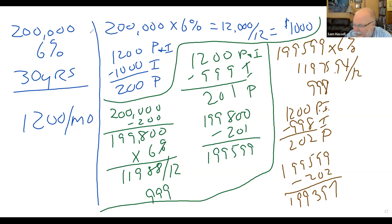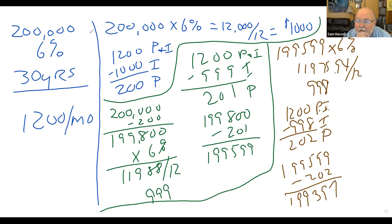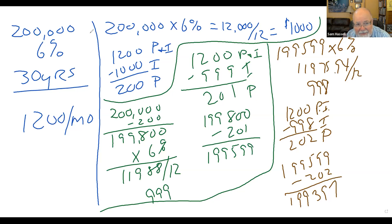I have something called Carl's Mortgage Calendar on my phone. If I key these numbers in, it gives me every principal and interest payment for the whole 360. There's no reason to do it this way — you just need to see it this way. Because there's going to be a question on the test, and there's a question in our workbook: how much do you owe in principal after two payments? This is the way you do it.